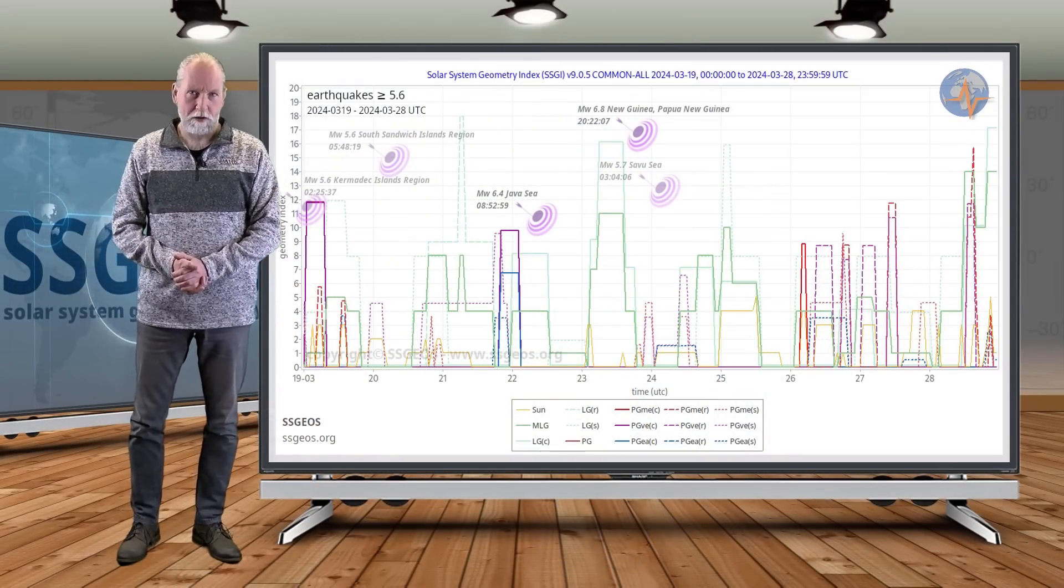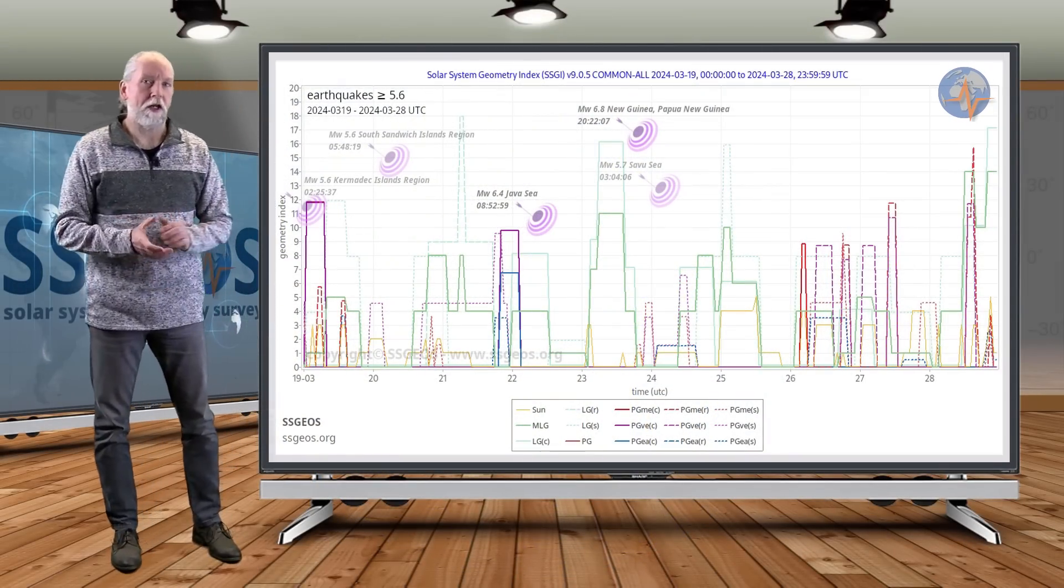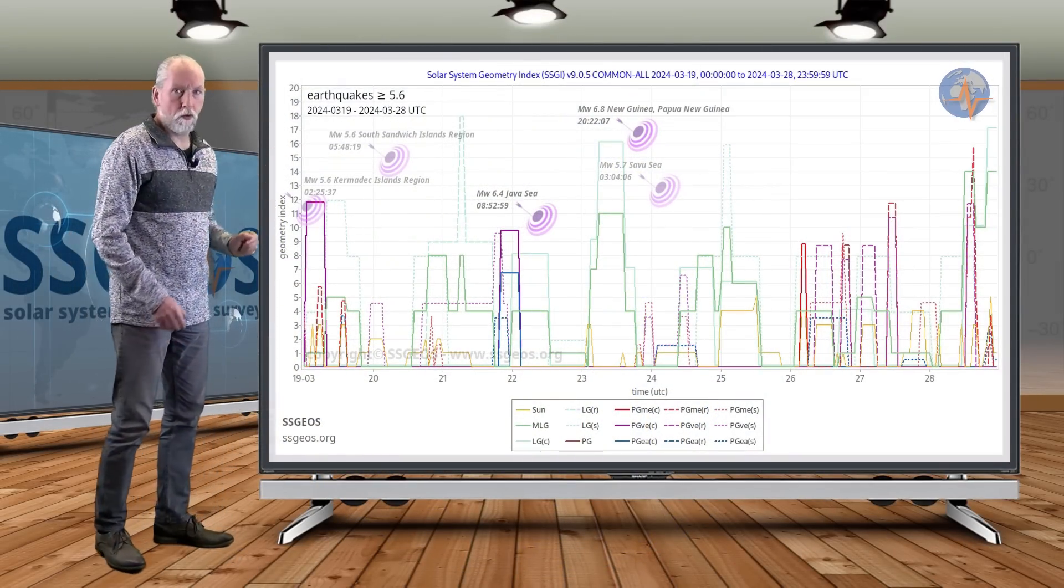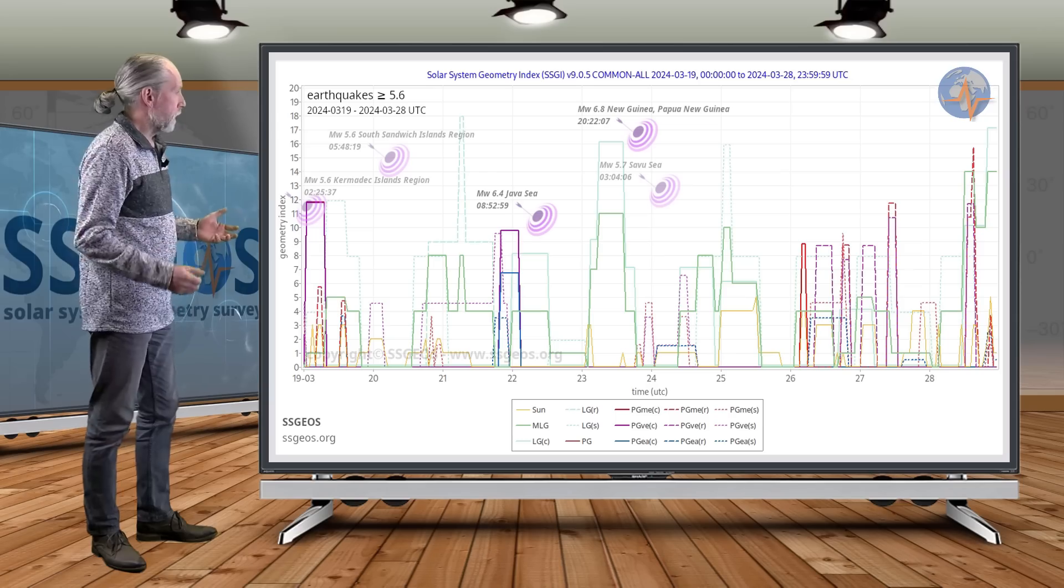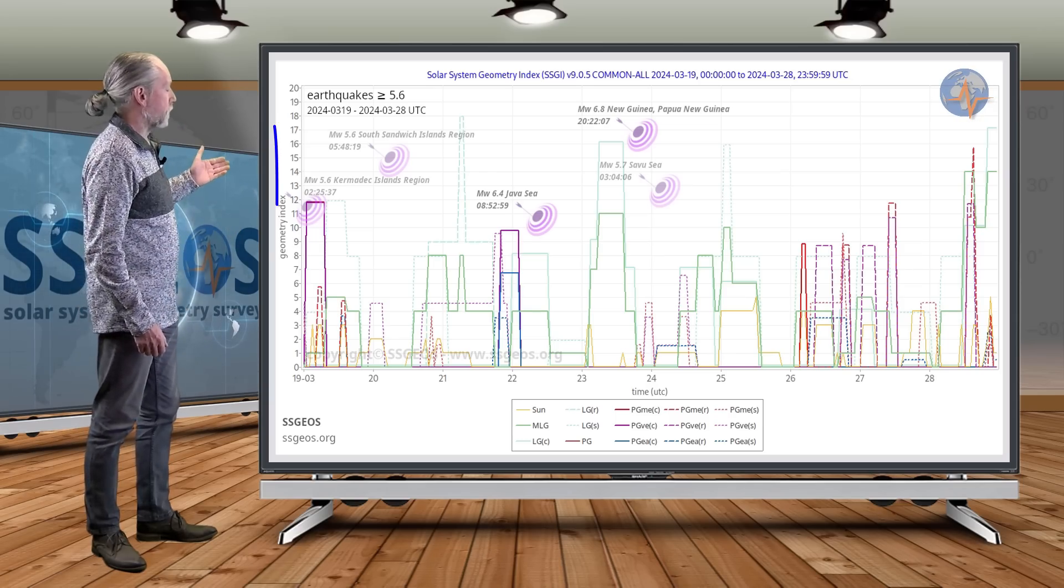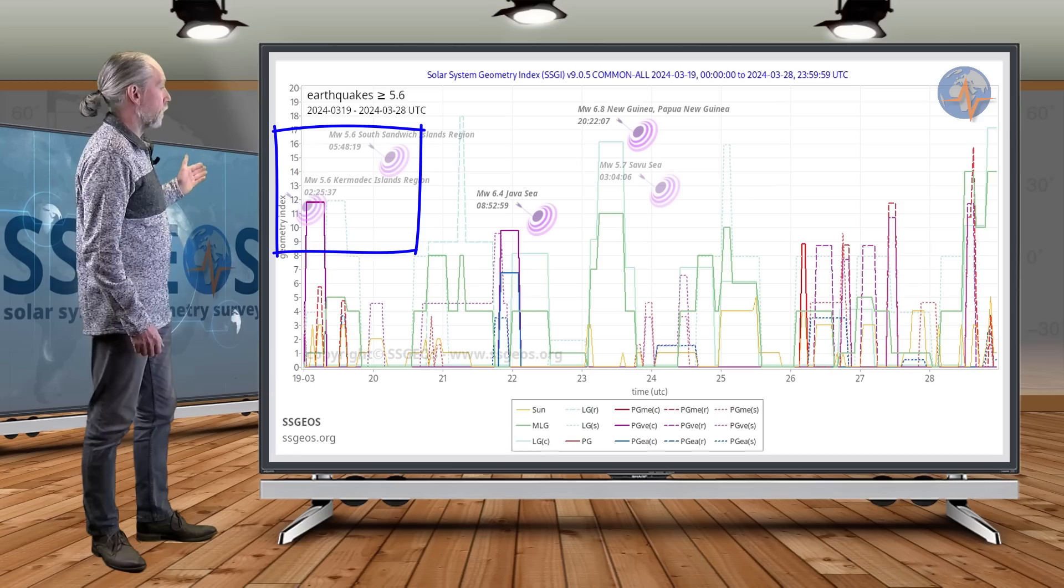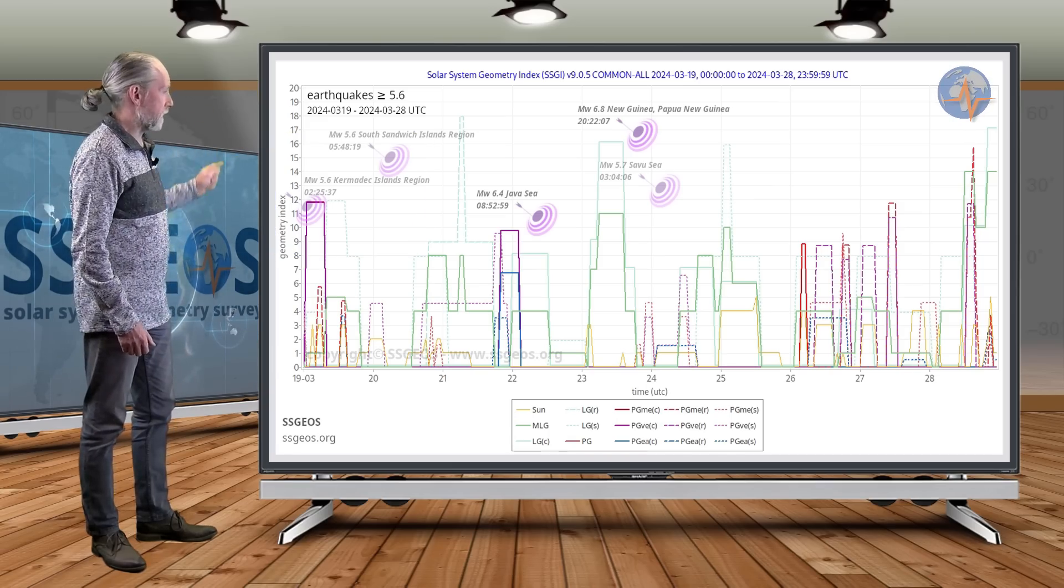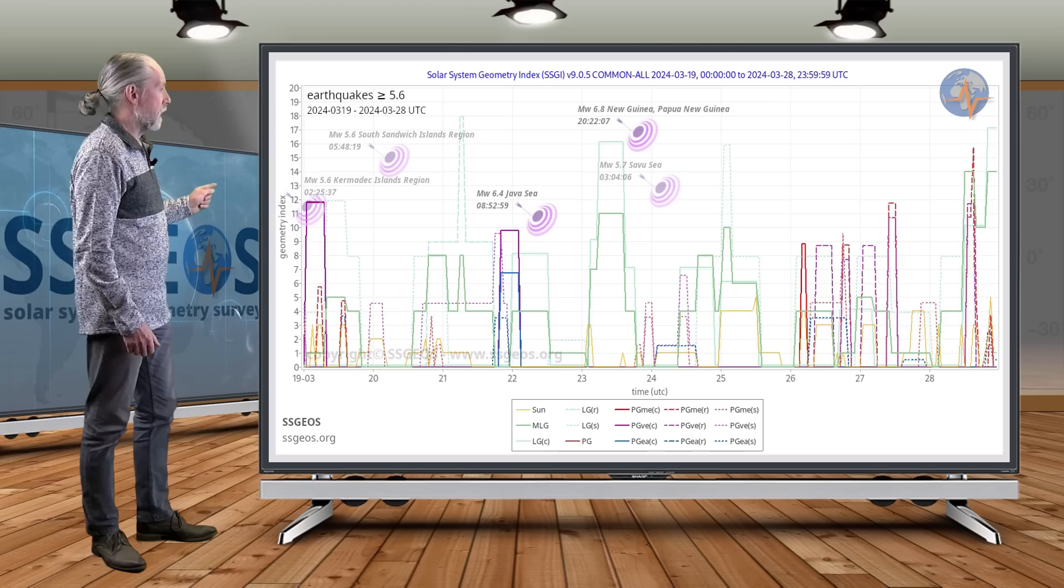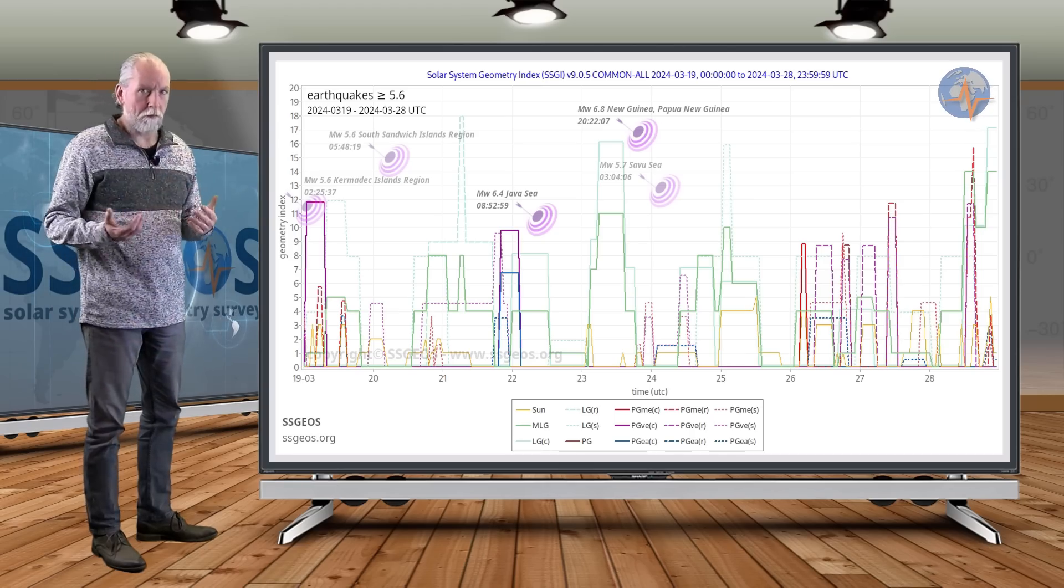Welcome to a new planetary and seismic update. We look at the SEGI graph from 19 to 28 March and we see the seismic activity that occurred on the 19th and on the 20th very early on. We had two seismic events of 5.6 magnitude following a planetary geometry involving Venus.